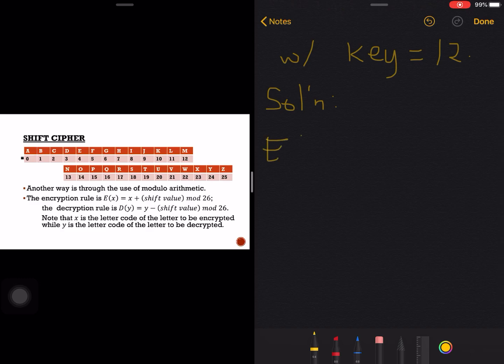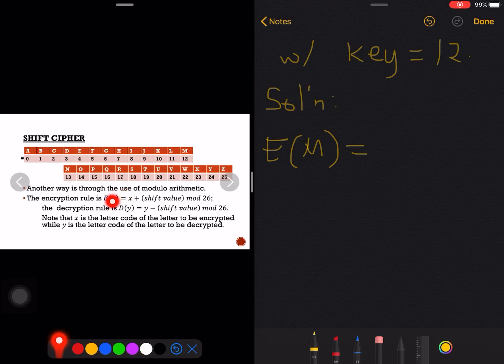Let's have a solution here. Encrypting M, let's start with M there. As I mentioned, if we are to encrypt M, we are to get the letter code of M. The letter code of M there is 12.